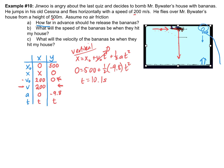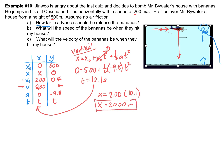Now I can put that time into the horizontal equation, because the time is going to be the same for both dimensions. Using x = x₀ + v₀t + ½at² for the horizontal: x₀ is zero, initial velocity is 200, time is 10.1, and the horizontal acceleration is zero so the last term drops out. We take 200 × 10.1 = 2020, which we round to one sig fig: 2000 meters. That's our answer for letter A.